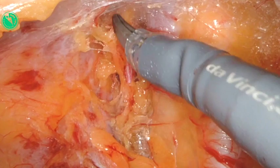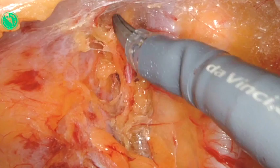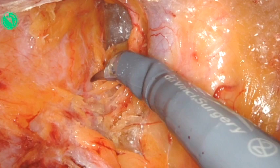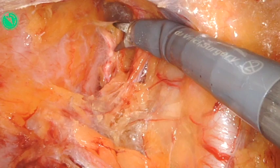This retroperitoneal dissection is demonstrating the classical anatomical relationship of water under the bridge, where the ureter travels underneath the uterine artery, en route to where it enters the posterior wall of the bladder, where it incorporates into the trigone.